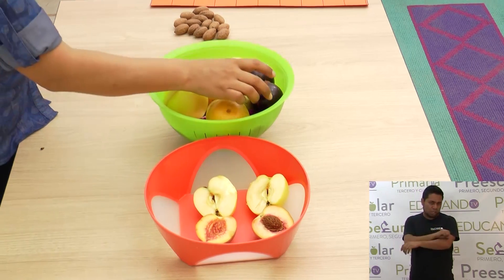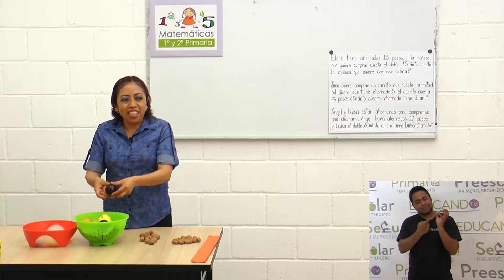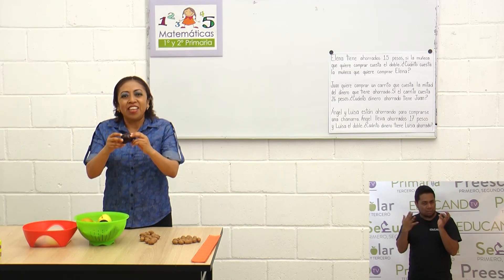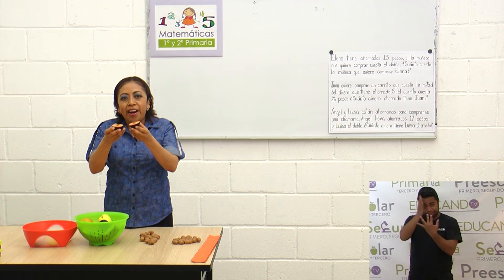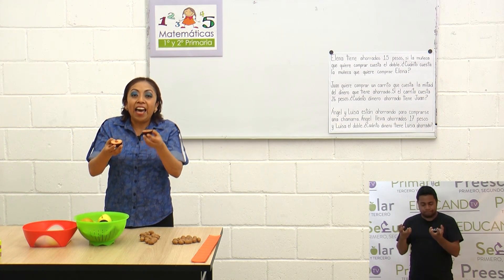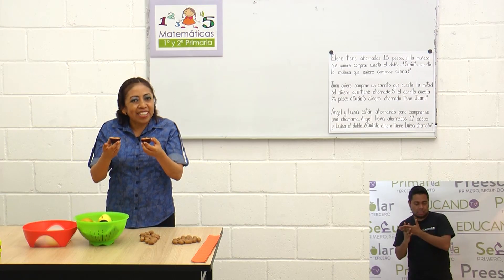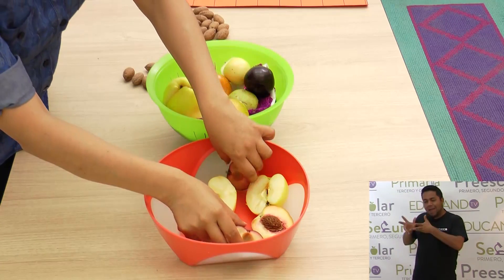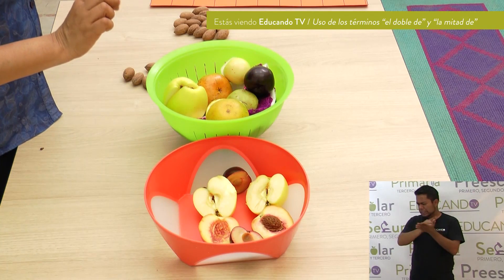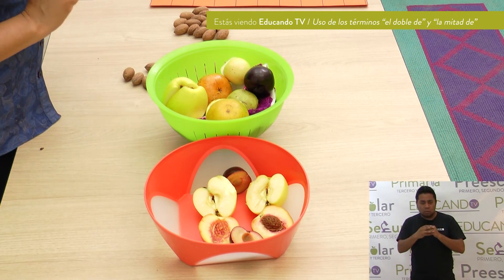¿También te gustan las ciruelas? Pues mira, aquí está una ciruela — deliciosa, con muchísima vitamina C. Si la cortamos en dos partes iguales, cada pedazo es una mitad. Acuérdate, deben ser iguales. Las manos las tengo perfectamente lavadas, y también desinfectamos las frutas, que es algo importante.